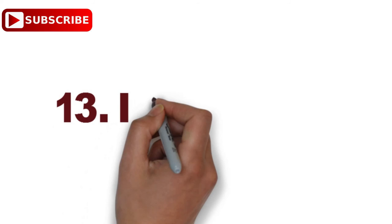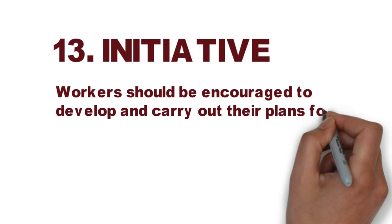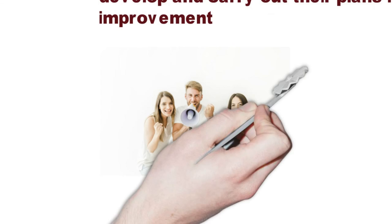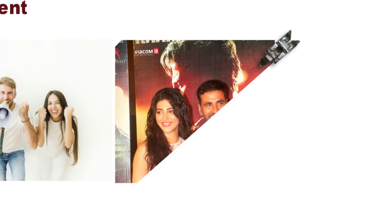Principle number thirteen: Initiative. According to Fayol, workers should be encouraged to develop and carry out their plans for improvements. Initiative refers to the first step taken by employees toward their self-motivation. This principle states that employees at all levels should be given freedom to some extent so that they can come forward and use their skills to achieve expected goals. For example, in the movie Gabbar is Back, a police officer allows a constable to express his plan to catch Gabbar.